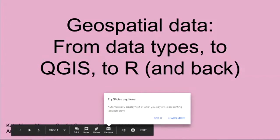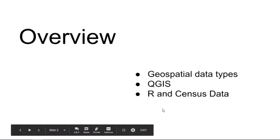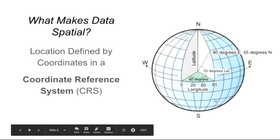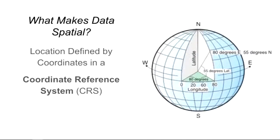I'll go into why we chose QGIS a bit later. To start, some quick basics: what makes data spatial? The very basics of spatial data is that it's data that has a spatial reference, such as coordinates or an address or metadata that allows it to be projected into a GIS. It also has some kind of associated coordinate reference system, which is a way to reference spatial data onto the globe.